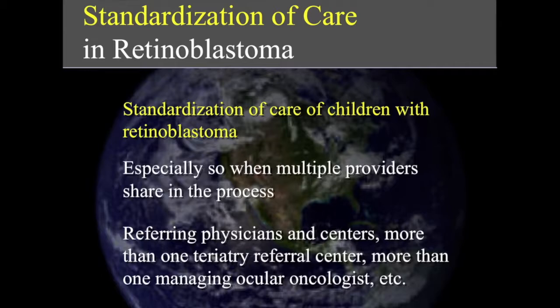It's especially important if there are multiple providers that share in the process. For example, it's easy for me to standardize because all retinoblastoma in Finland comes to me for treatment. In a country where you may have two or three centers, it makes sense that they collaborate with each other and try to do things in the same way — selecting the best approach out of the three centers, hopefully based on evidence, perhaps contributing to a common register just like the international data is collected.